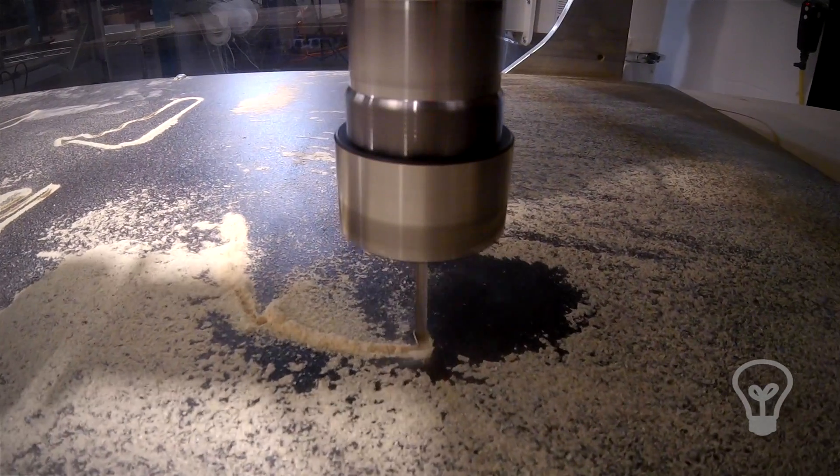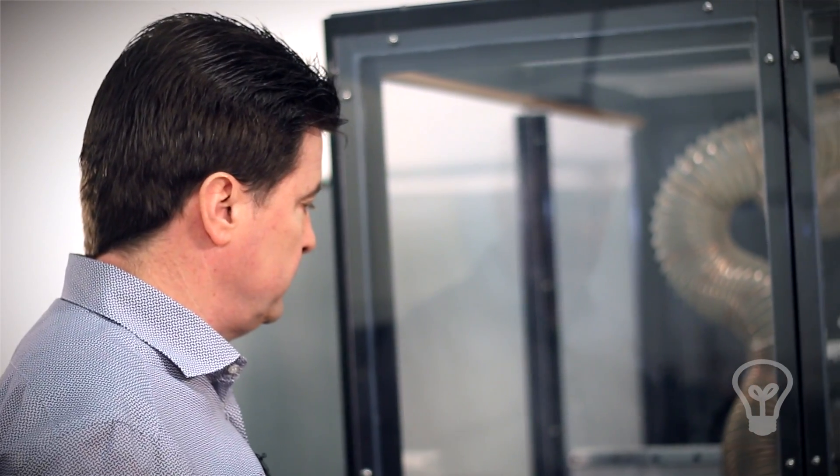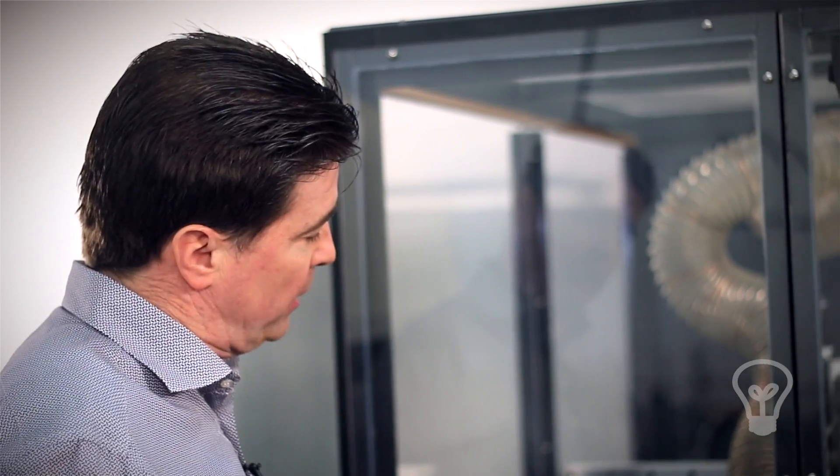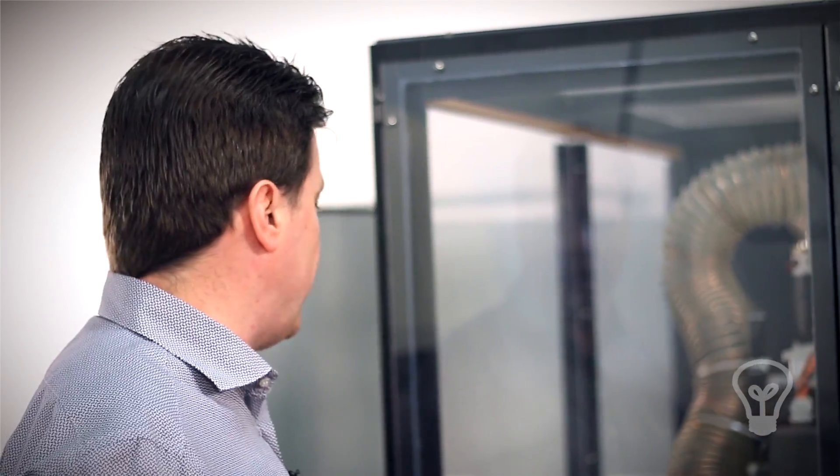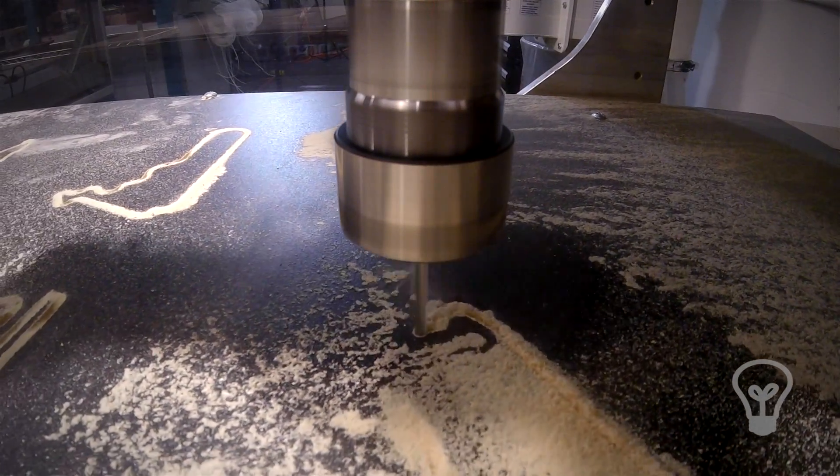The nice thing about this machine is it is self-contained so the dust doesn't get into the room and it's pretty easy to clean up. You may want to think about an enclosure for your machine if you decide to build one. It's a really good idea because you can keep it in the house and it really won't cause any problems with dust.